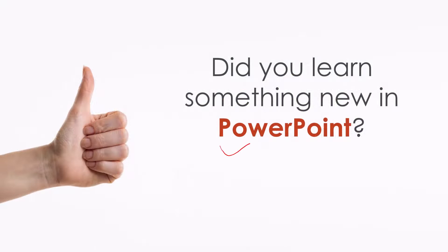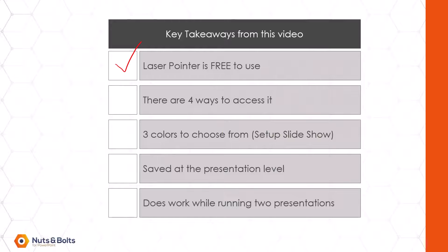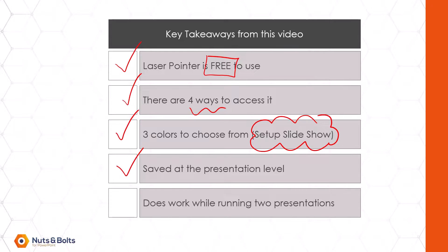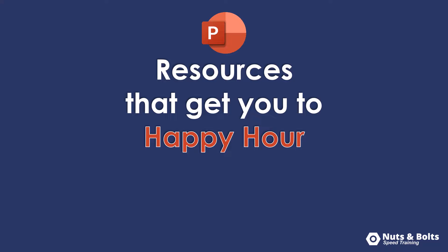If you learned something new about Microsoft PowerPoint, please let me know with a thumbs up on YouTube. Your takeaways: the laser pointer is free to use in Microsoft PowerPoint, there are four different ways to access it, there are three different colors you can choose from using the Setup Slideshow dialog box, the laser pointer color is saved at the presentation level not the PowerPoint level, and this does work when running two or more presentations at the same time using control plus click and drag. If you want to keep up to date on my latest PowerPoint tips and tricks, make sure you subscribe, and look for links beneath this video for blog posts and video courses.